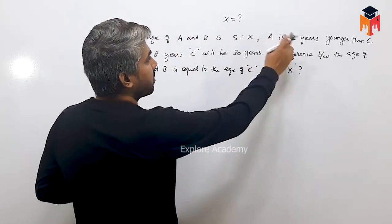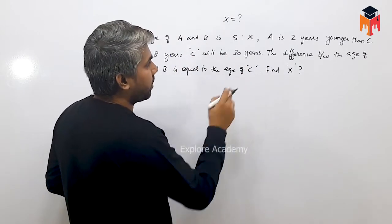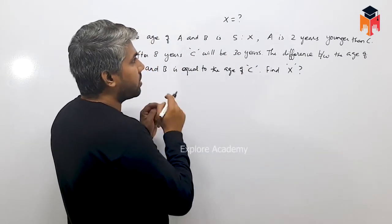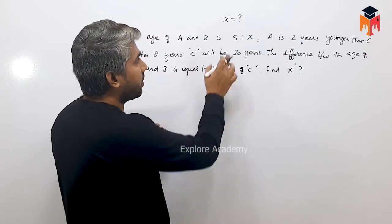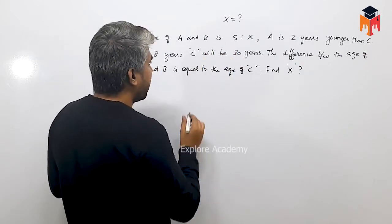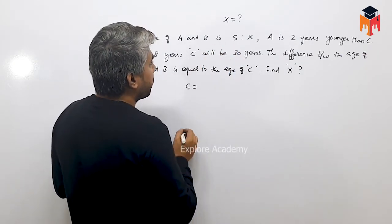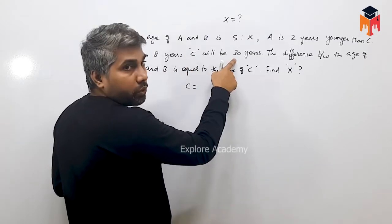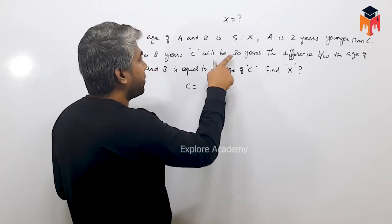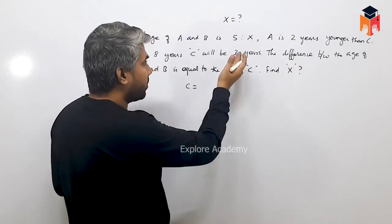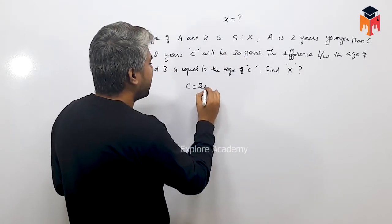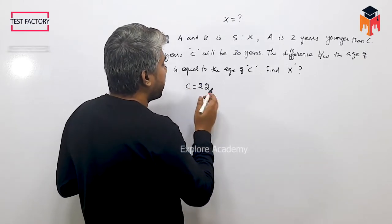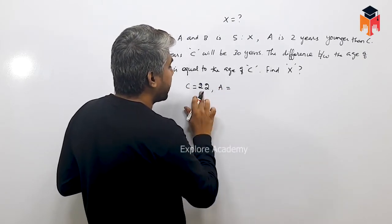Looking at the value of C: C's present age is 30 minus 8, which equals 22. A is 2 years younger than C, so A's present age is 22 minus 2, which equals 20.